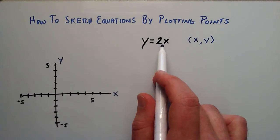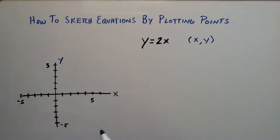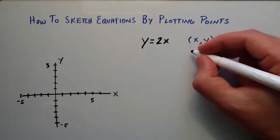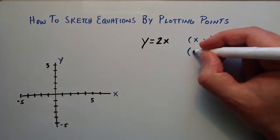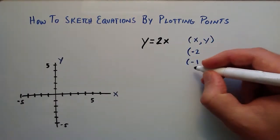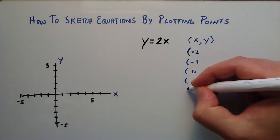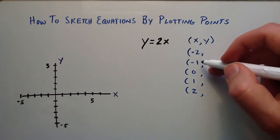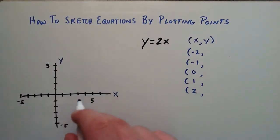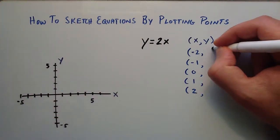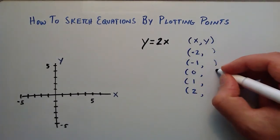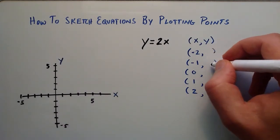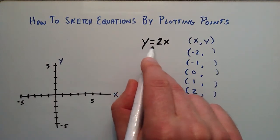We're going to be looking at the equation y equals 2x. Basically what we're going to do is choose a bunch of different x values and then figure out what the corresponding y values need to be to make this a true statement. I'm going to choose x values of negative 2, negative 1, 0, 1, and 2. These are the standard values usually chosen so you can plot around the origin. These will be the x components of our points, and we'll use them with this equation to determine the corresponding y components.